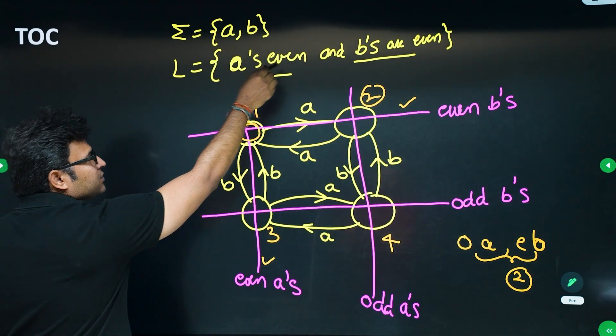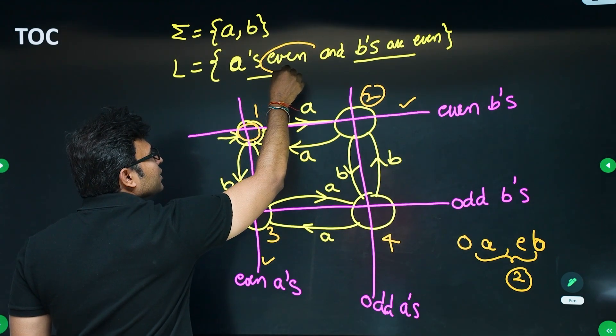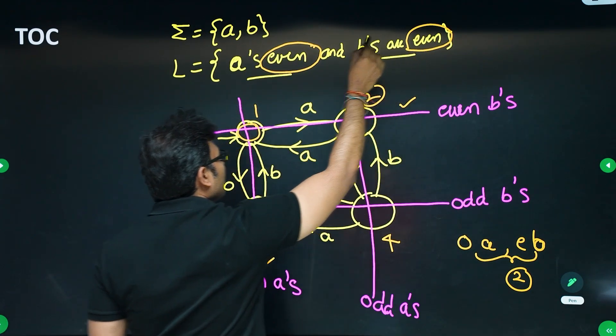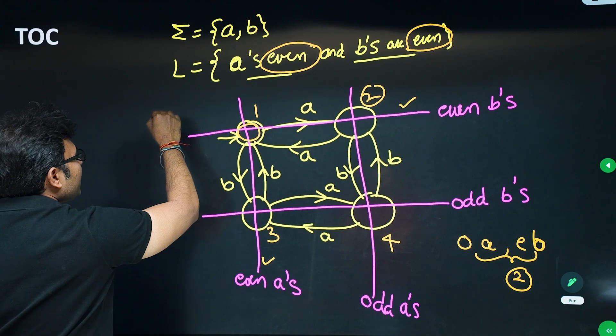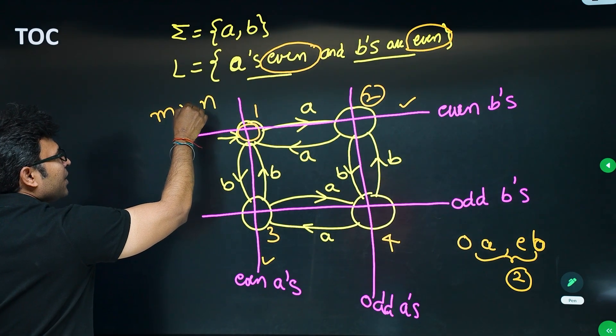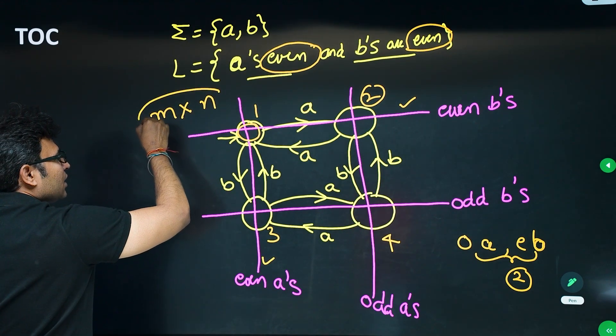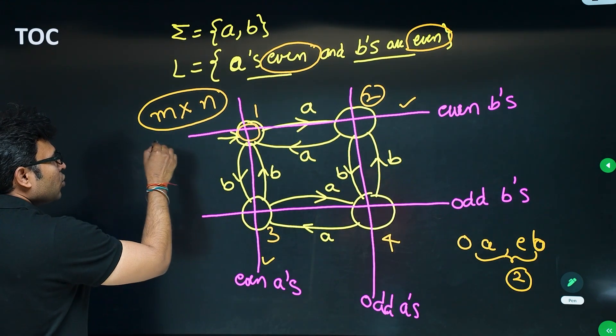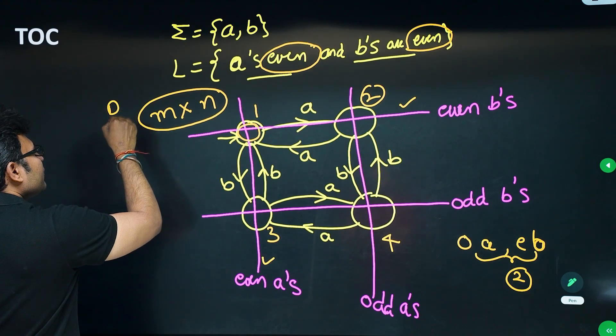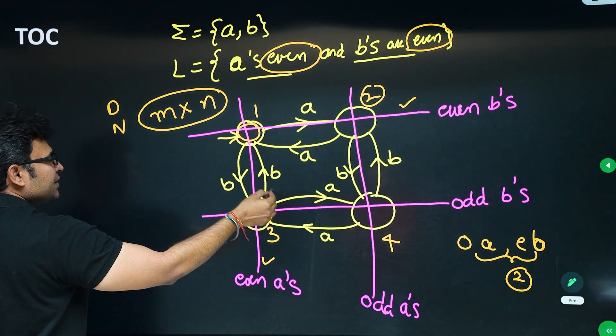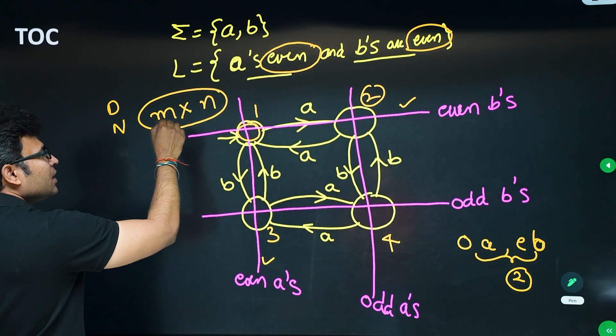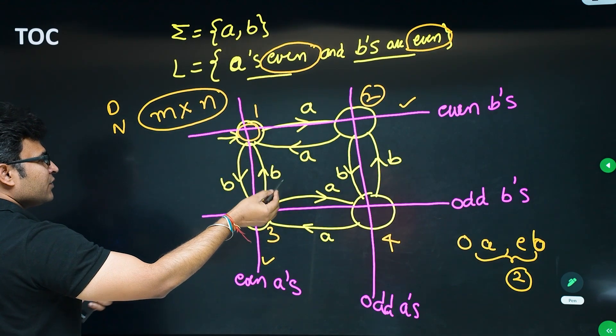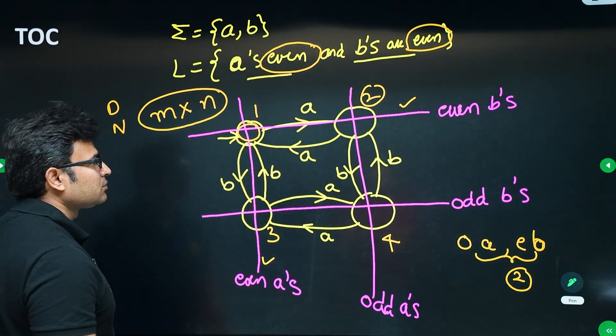So how many number of states will be there? Now, a's we are counting whether it is divisible by 2 or not. And b's we are counting whether it is divisible by 2 or not. Generally, if it is divisible by M and divisible by N, then M by N is the number of states in the machine. So the answer for this is both for DFA and NFA, the number of states in such a machine will be M into N. Since there is no dead state, DFA and NFA both are the same.